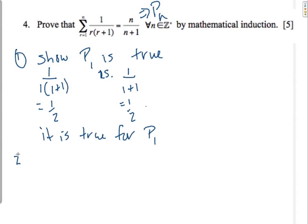The second step is my assumption. Okay, I am going to assume Pk is true. I must say that. I must tell my reader that I'm assuming it to be true.